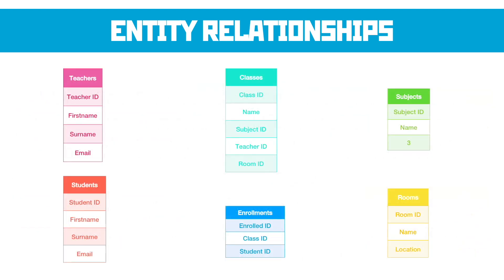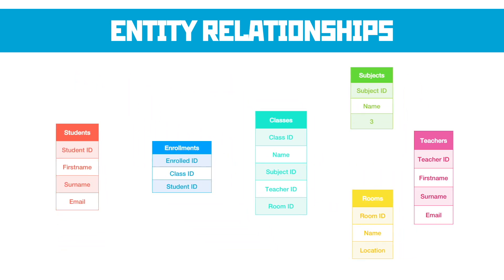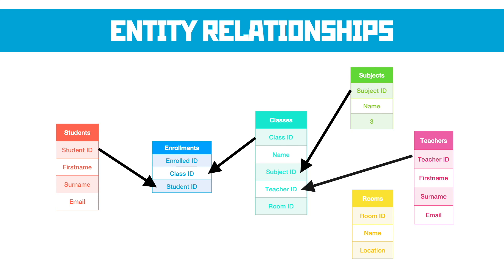Here are those same tables defined in entity diagrams — just the name of the table at the top and the list of fields underneath. An entity diagram explains how they all relate to each other. One student can appear in the enrollment table multiple times. I like to picture this as where the drop-down menu goes — and the drop-down menu goes on the many side. One class can be enrolled many times; one subject can be in the classes list many times; one teacher can be in the classes list many times; and one room can be in the classes list many times. That's how all the tables relate to each other.